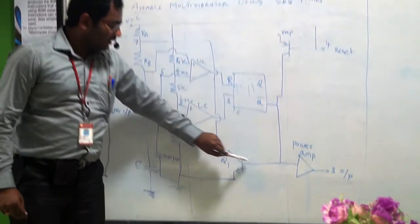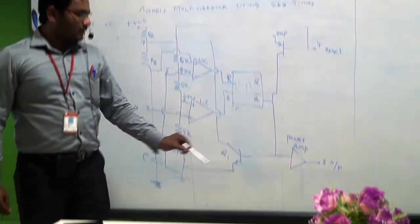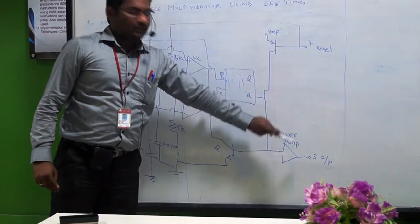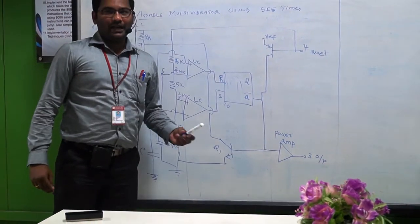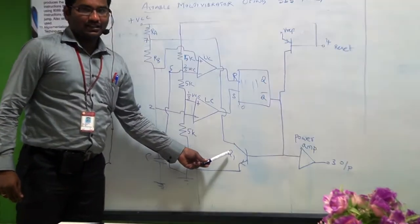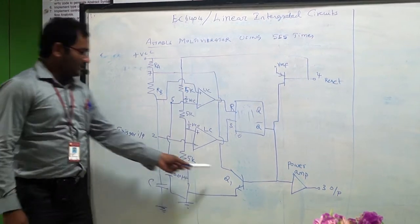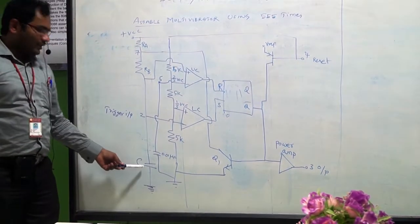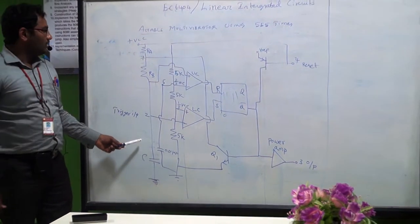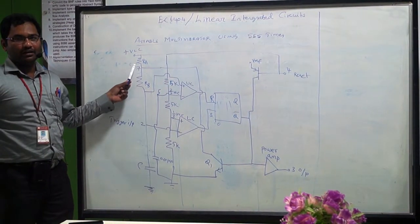If Q-bar equal to 0 is given to the base of transistor Q1 and to the input of the power amplifier — since Q-bar equals 0, the output of the power amplifier is 1, because the power amplifier basically acts as an inverter circuit. Then Q1 acts as a discharging transistor connected at the junction of RA and RB. Since Q1 is off, the voltage across the capacitor starts to increase from 0 to a maximum of 2/3 Vcc through resistors RA and RB.